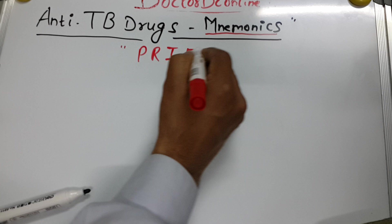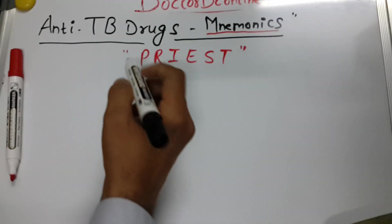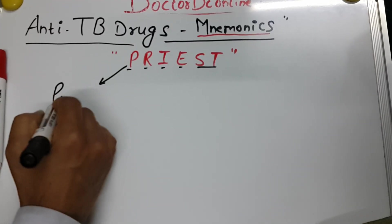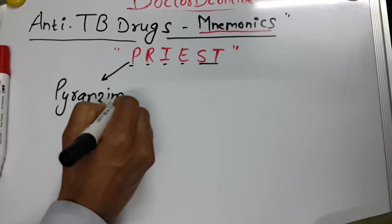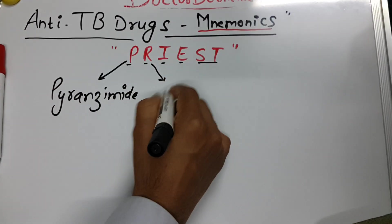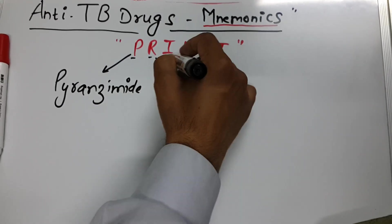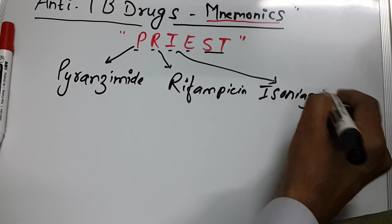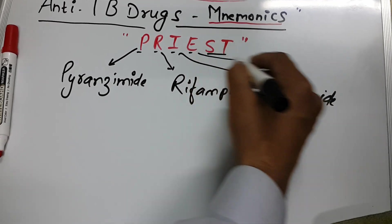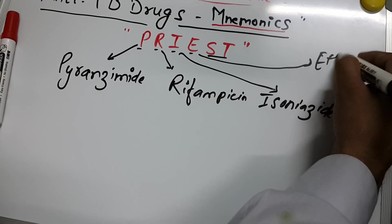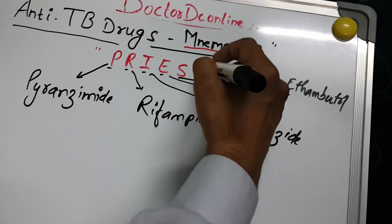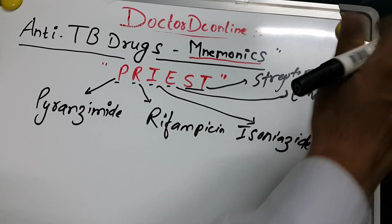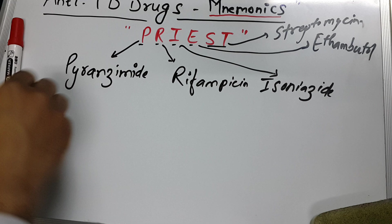P stands for Pyrazinamide, R for Rifampicin, I for Isoniazid, E for Ethambutol, and ST for Streptomycin. So the mnemonic is PRIEST.